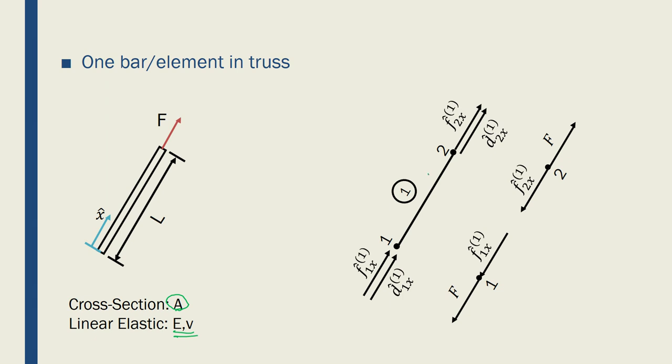We will then proceed to draw the free body diagrams for each of the elements in the truss. So for this one that we have drawn in here, we can draw the free body diagram. It has two nodes, node 1 and node 2, and it is just one element. So we show the elements with a circle and a number inside of it.